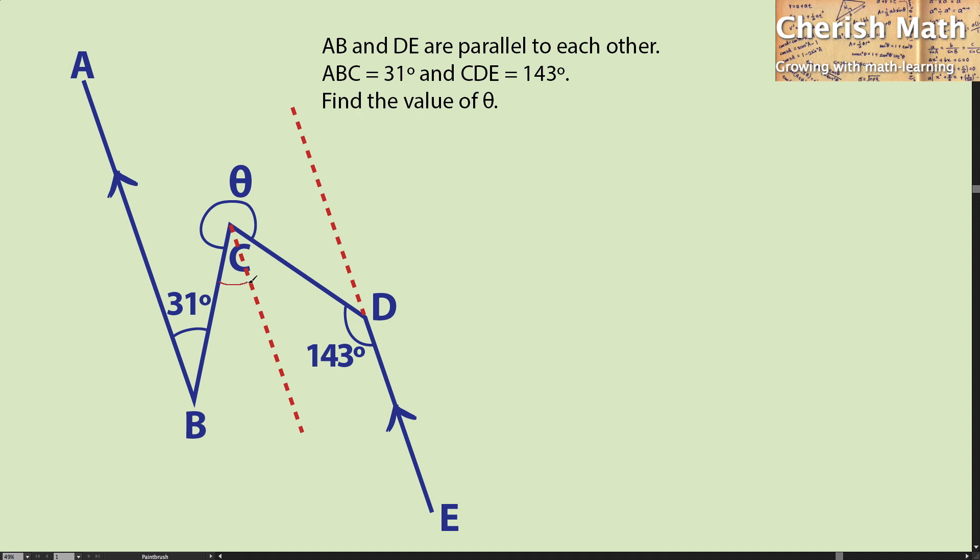For the value of this part, it is equal to 31 degrees because it is alternate with 31 degrees. And for this part, I'm going to use 180 degrees minus 143 degrees, and I'm going to get 37 degrees.